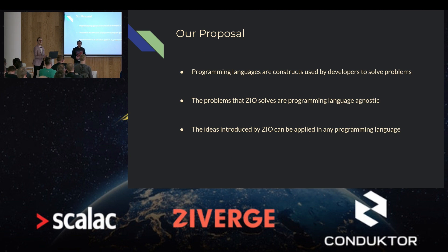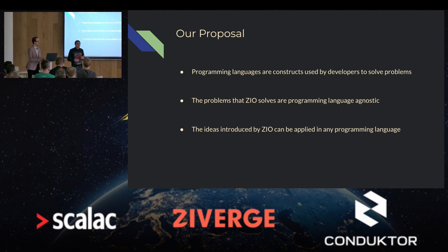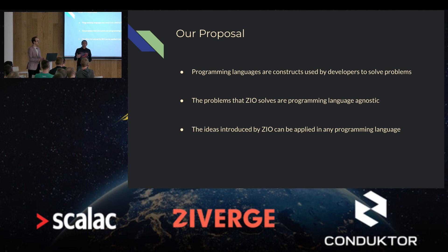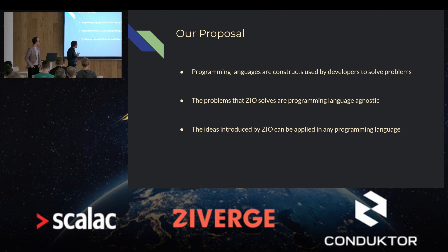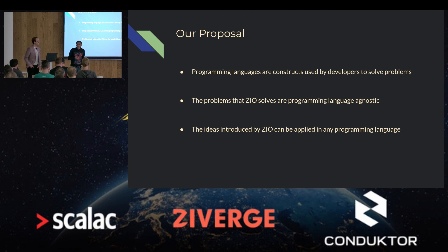Scala is a great language for the JVM domain. Java is great for the JVM domain. TypeScript is great for Node.js and JavaScript target environments. But does a language stop there? We don't think so. We think languages can be embedded in other languages and can exist across different languages. The problems that ZIO solves are, we believe, programming language agnostic. The ideas that ZIO introduced can be applied to many different programming languages. Today we're going to look at how they are applied in two languages and a half.